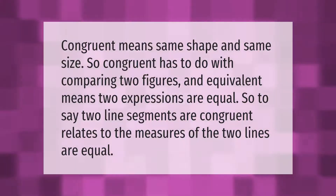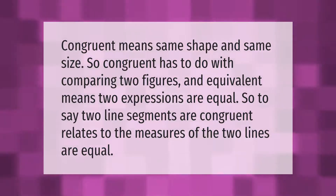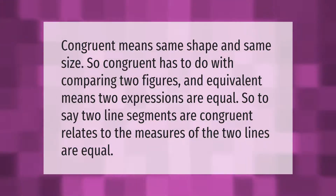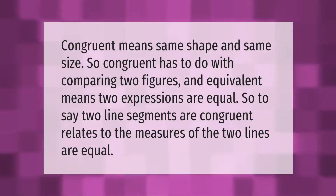Congruent means same shape and same size, so congruent has to do with comparing two figures. Equivalent means two expressions are equal. To say two line segments are congruent relates to the measures of the two lines being equal.